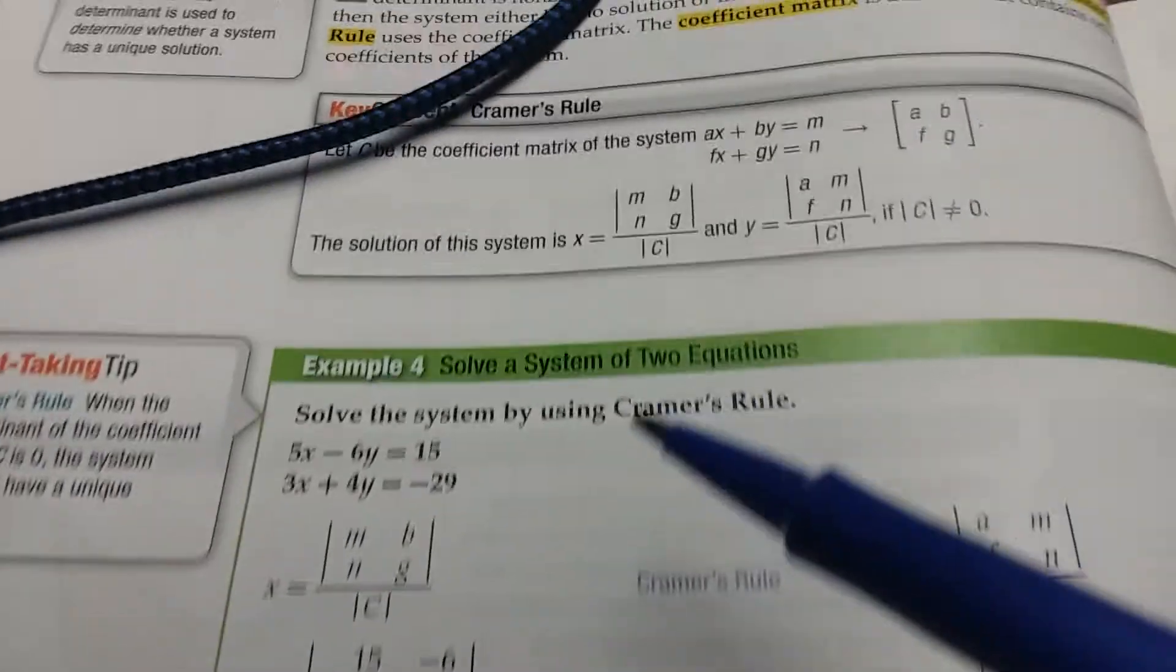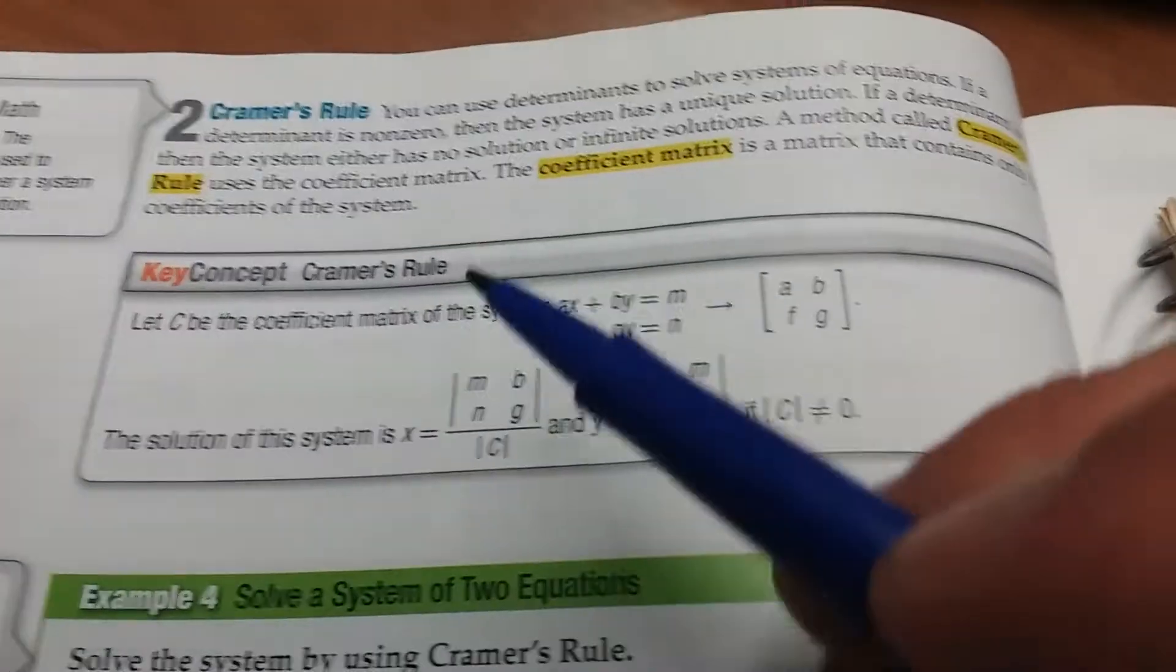All right, we're on page 192. We're going to be looking at Cramer's rule.